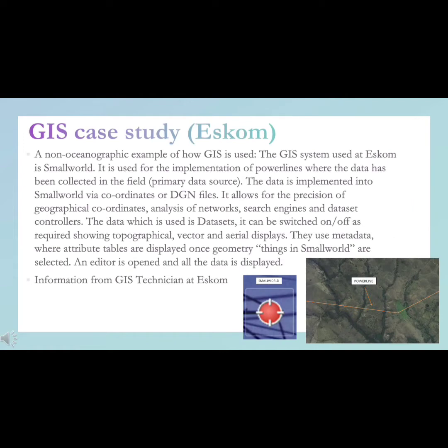A GIS case study: ESCOM, a non-oceanographic example of how GIS is used. The GIS system used at ESCOM is SmallWorld. It is used for the implementation of power lines where the data has been collected in the field, which is a primary data source. The data is implemented into SmallWorld via coordinates or DGN files.